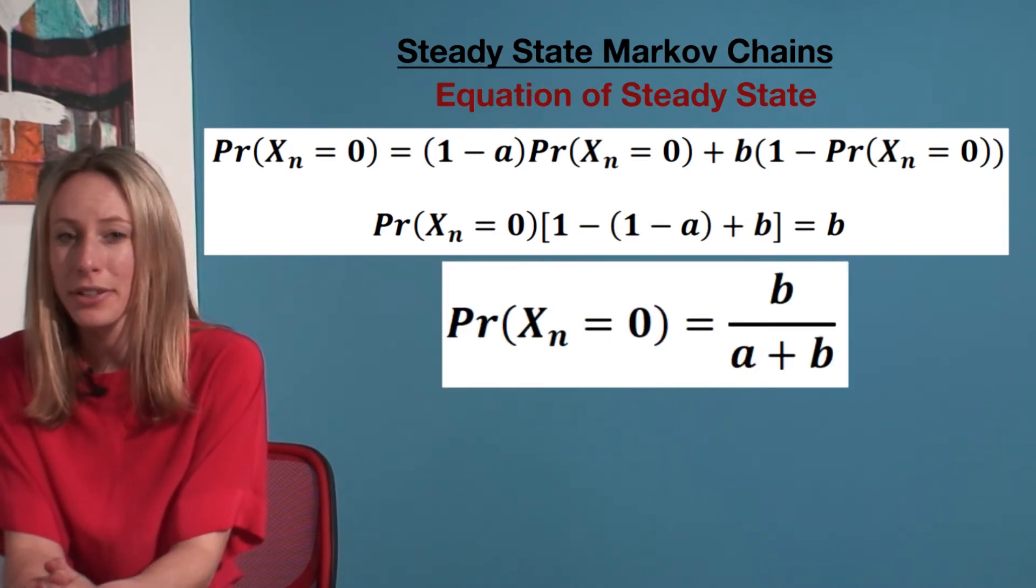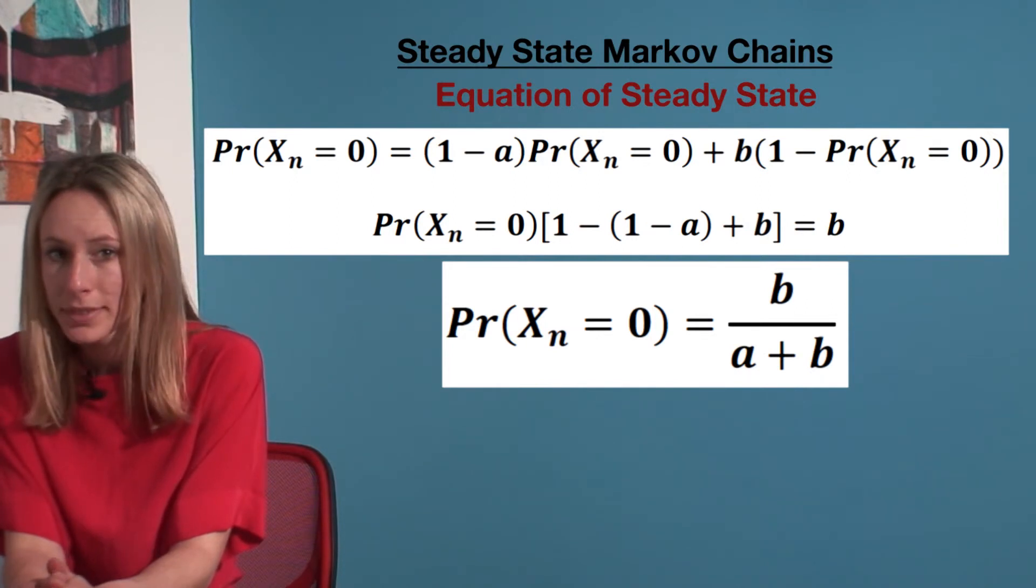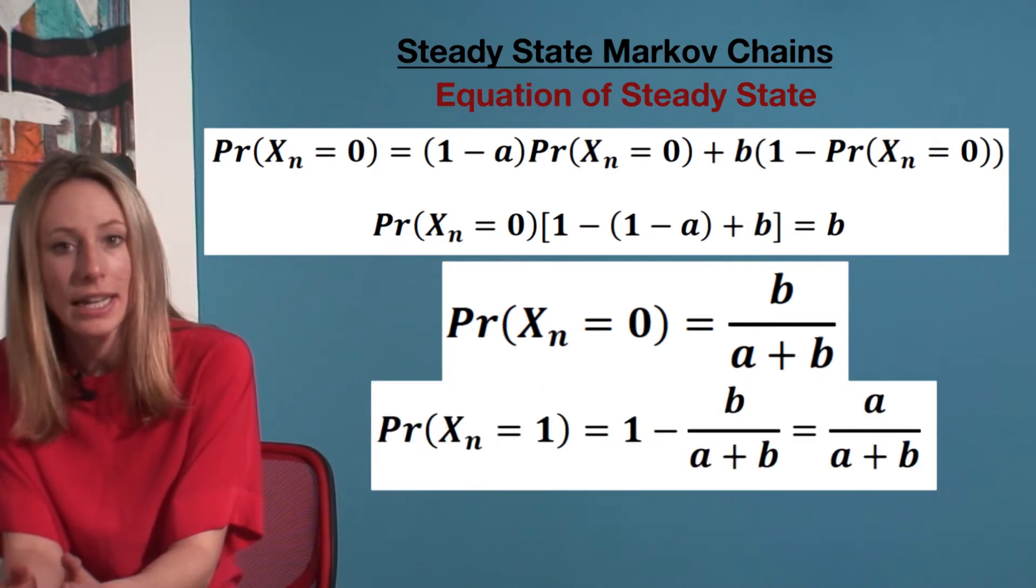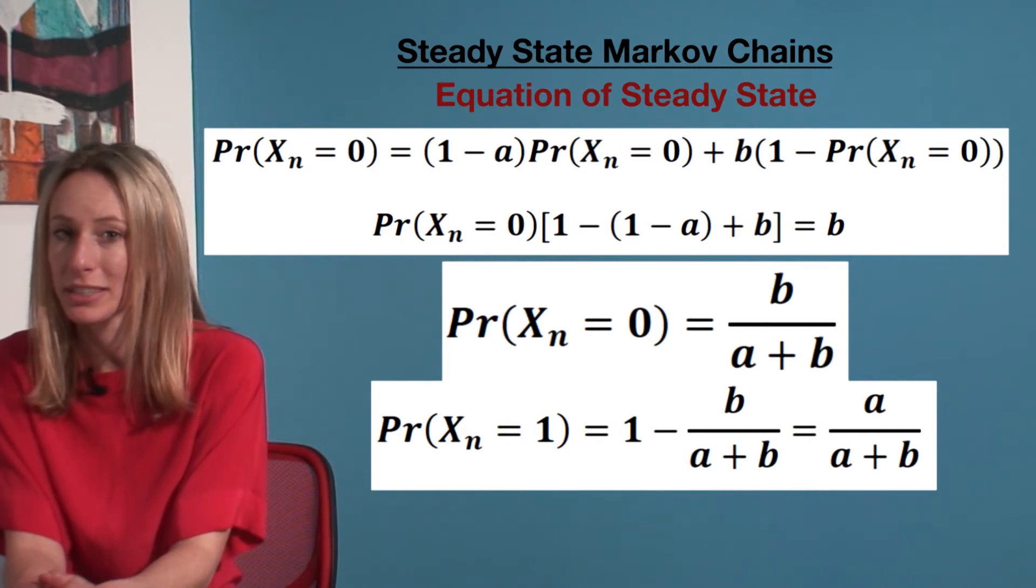Therefore, the probability of state zero is b over (a+b), and the probability of state one is 1 minus that, which equals a over (a+b).